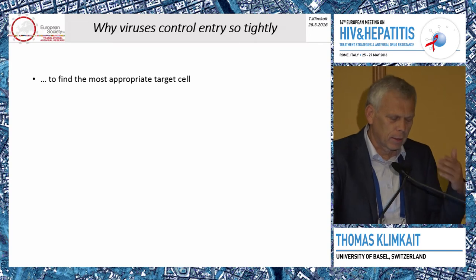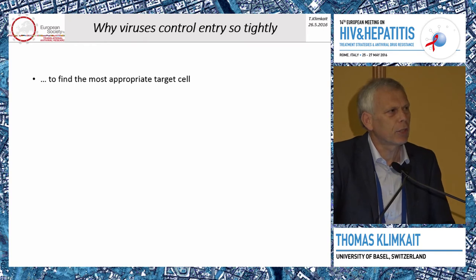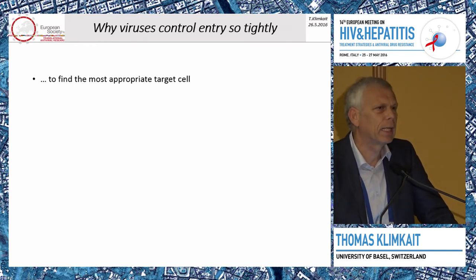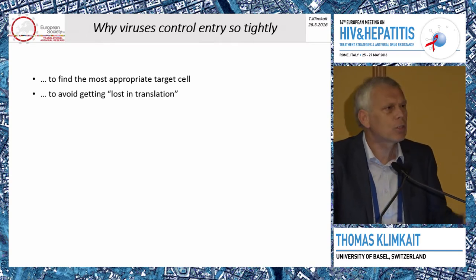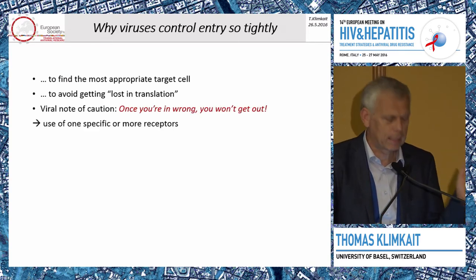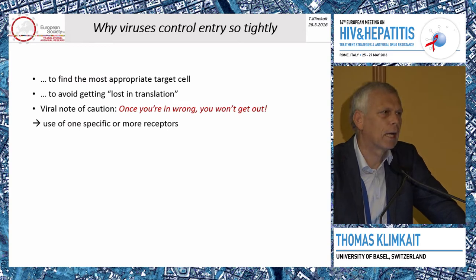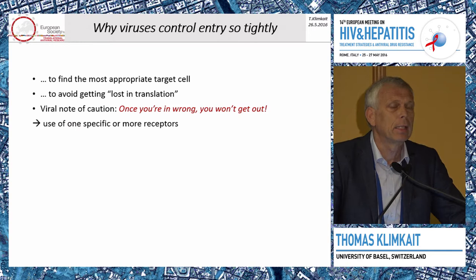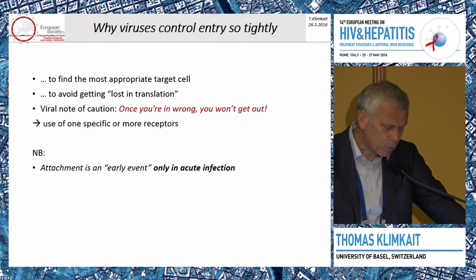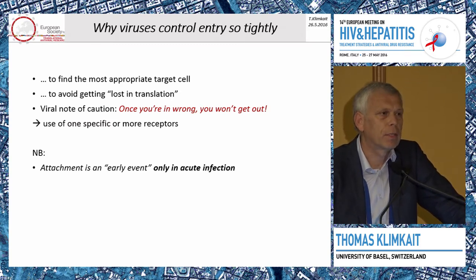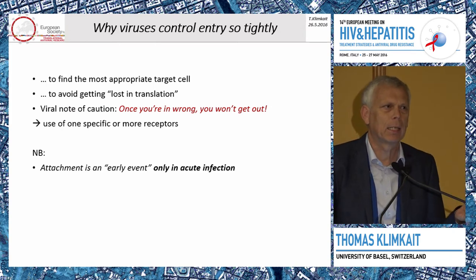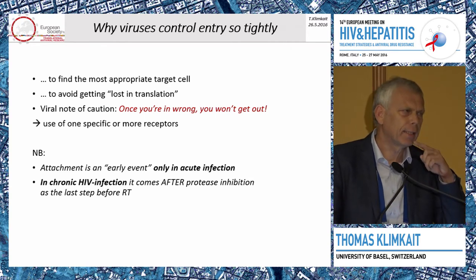Why would a virus control this entry so tightly? A virus like HIV enters the bloodstream, dropping into four and a half liters of blood and floating around, needing to find an appropriate target cell. It needs to avoid getting lost - binding somewhere that isn't the right cell - because that's the viral key principle: once you are in the wrong cell, you won't get out. Imagine HIV gets into a skin cell or liver cell and cannot express the viral genes appropriately; there's no way for the virus to reverse this process. This is why HIV and many other organ-specific viruses care very much about tight binding and attachment before entering the cell.